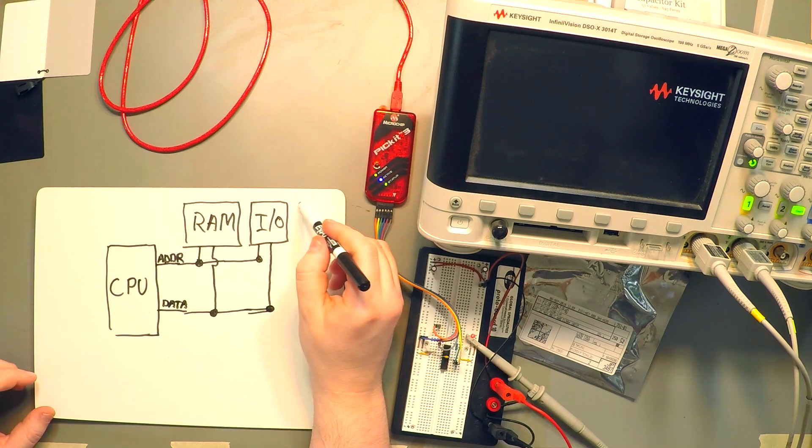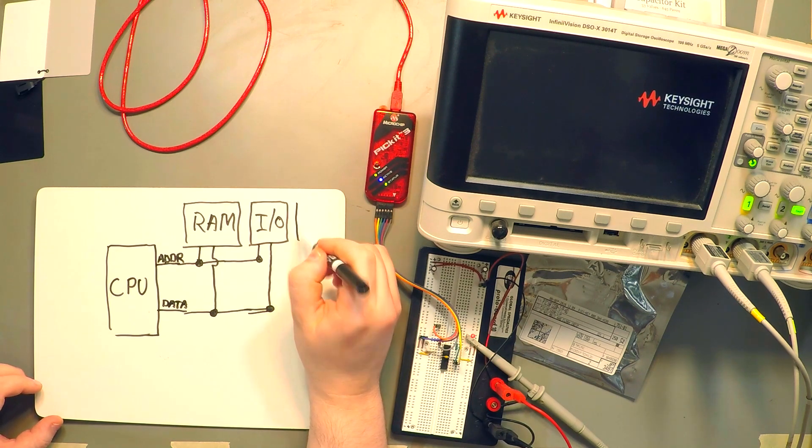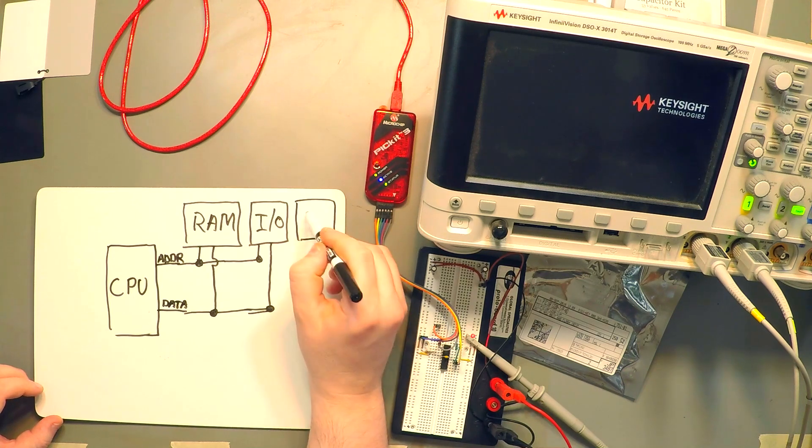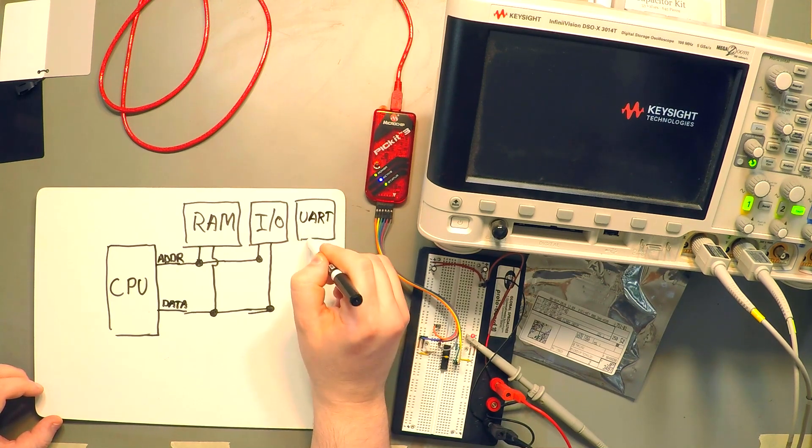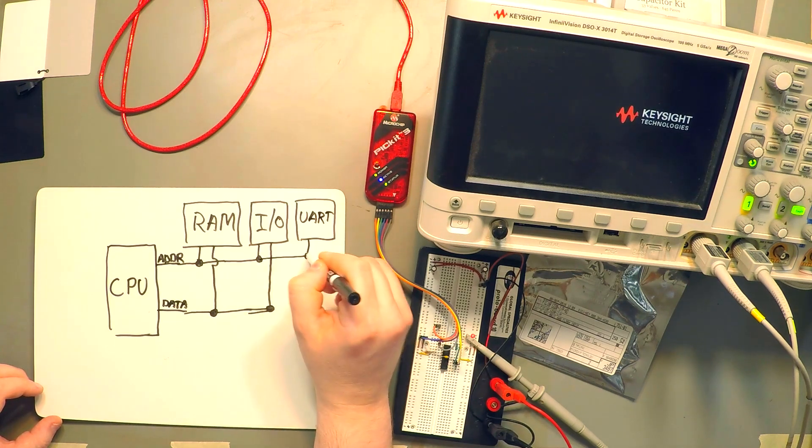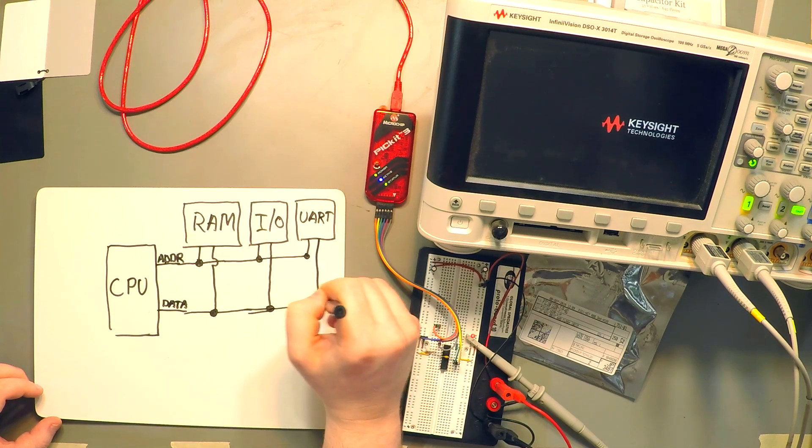Just as an example, we may want to communicate with other devices using common protocols. So we'll add a UART peripheral right here. And it's connected once again to the address and the data line.